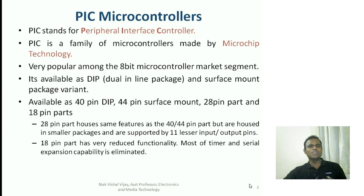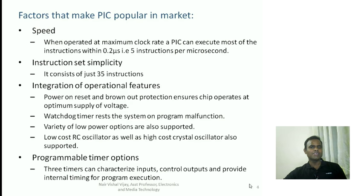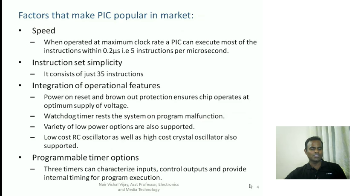Let's see in detail what makes PIC so popular. Speed is one very important factor. At maximum clock rate, PIC takes only 0.2 microseconds to execute one instruction, meaning it can execute up to five instructions per microsecond. That is way beyond the capability of most microcontrollers available in the market, making PIC microcontrollers very useful for high-speed instruction execution.